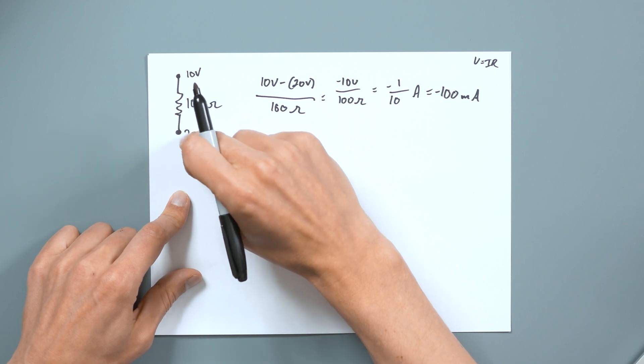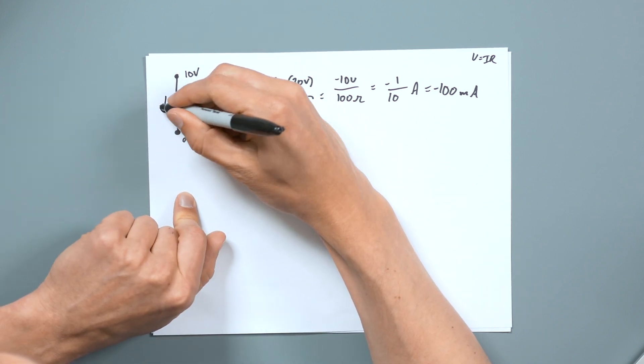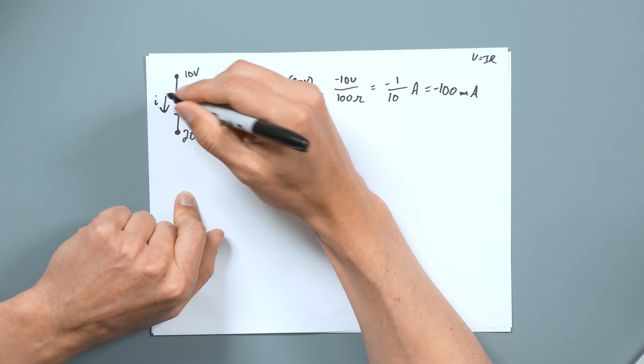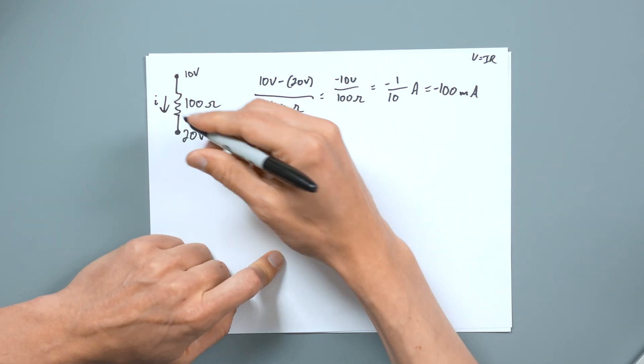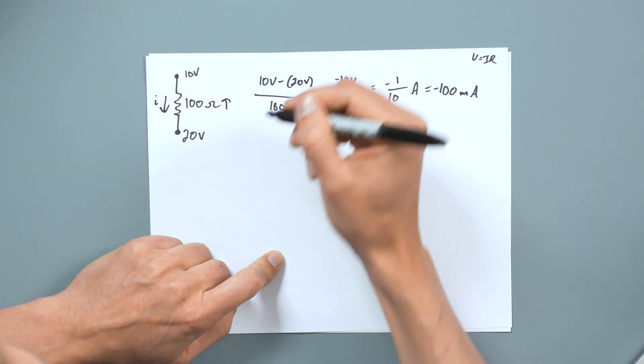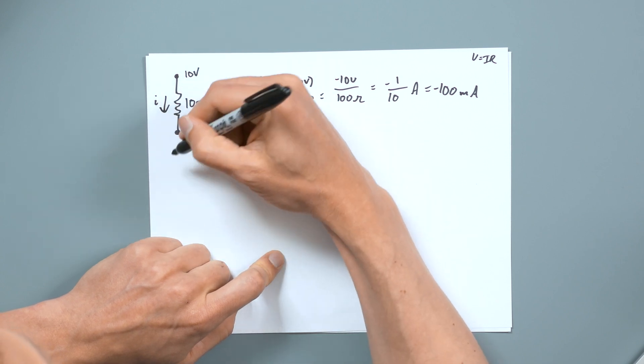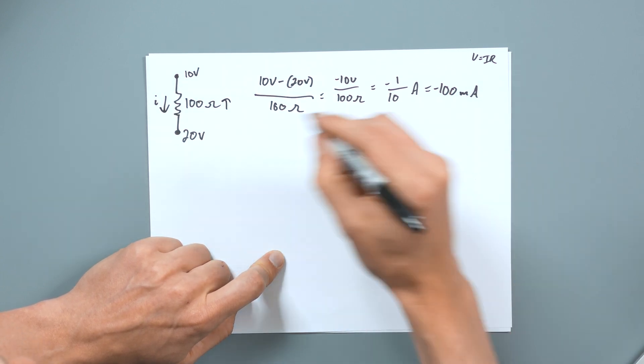So even though we have established that our current is going this way, in reality, it's going the opposite way. But since we established that the current is going that way, we want to say negative 100 milliamps.